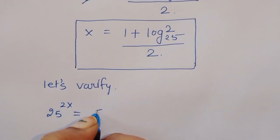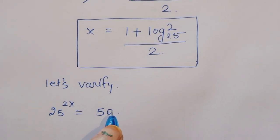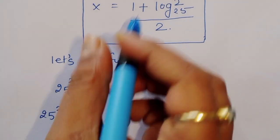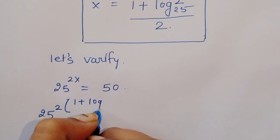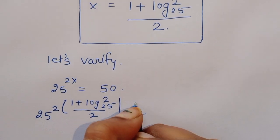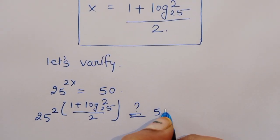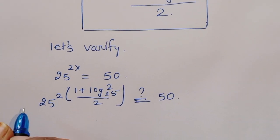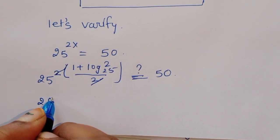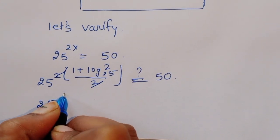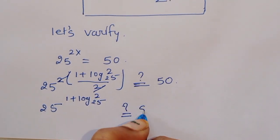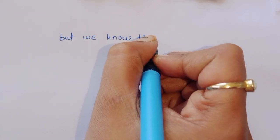Now let's verify. Our question is 25 raised to 2x is equal to 50. We substitute the value of x, so 25 raised to 2 times the quantity 1 plus log of 2 to the base 25 divided by 2. The 2s cancel, giving us 25 raised to 1 plus log of 2 to the base 25, and this should equal 50.